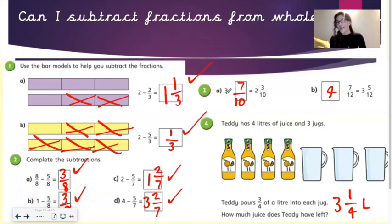Question number three. Part A, 3 take away 7 tenths equals 2 and 3 tenths. Part B, 4 take away 7 twelfths equals 3 and 5 twelfths.